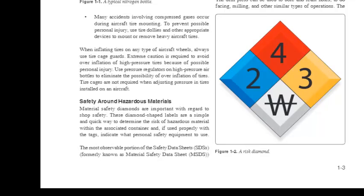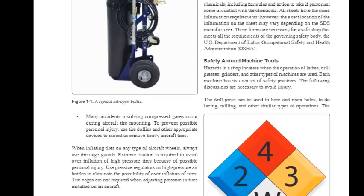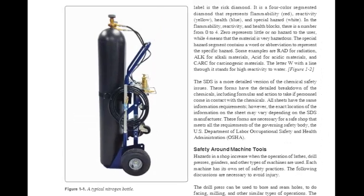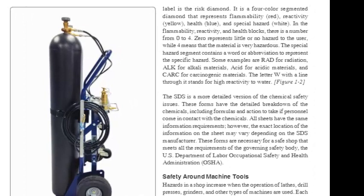The most observable portion of the Safety Data Sheets, or SDSs, which were formerly known as Material Safety Data Sheets, MSDSs, label is the RISC diamond. It is a four-color segmented diamond that represents flammability (red), reactivity (yellow), health (blue), and special hazard (white).